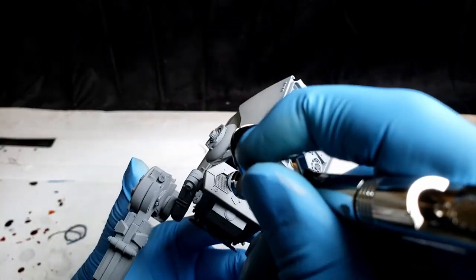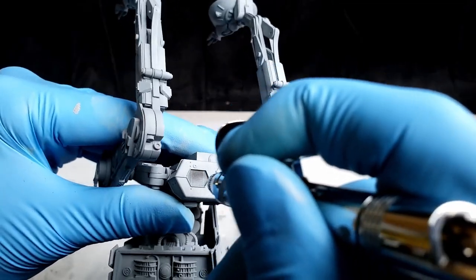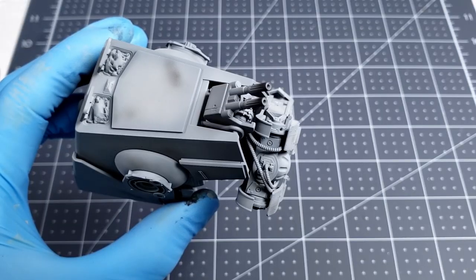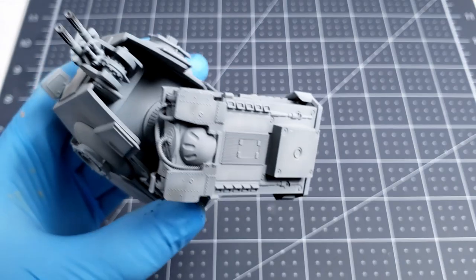While I had the black paint loaded in the airbrush, I decided to scorch the exhaust vents. Once the scorching was complete, I moved on to chipping and edgeware.